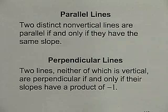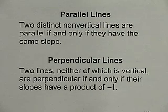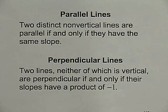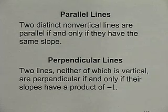The last form of the equation of a line is the standard form, given by ax plus by equals c. In this form it's easy to find the x and y intercepts, which is helpful when graphing. We also need to look at parallel and perpendicular lines. Two distinct non-vertical lines are parallel if and only if they have the same slope. Two lines are perpendicular if and only if their slopes have a product of negative 1.